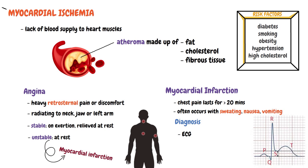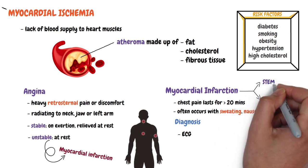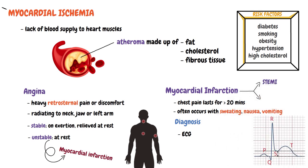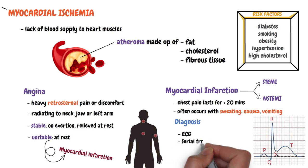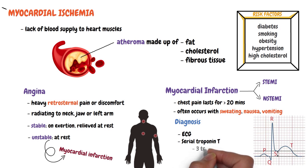We must bear in mind that there are two types of MI: STEMI, short for ST elevation myocardial infarction, and NSTEMI, short for non-ST elevation myocardial infarction. This is why we can't rely only on ECG changes and must look for raised cardiac marker levels in the serum. The most sensitive and widely tested cardiac marker is troponin T. Serial testing of troponin T levels is done to rule out myocardial infarction, up to three times at six-hour intervals. Troponin T levels become detectable within two hours of the MI and remain raised for up to one week post-MI.